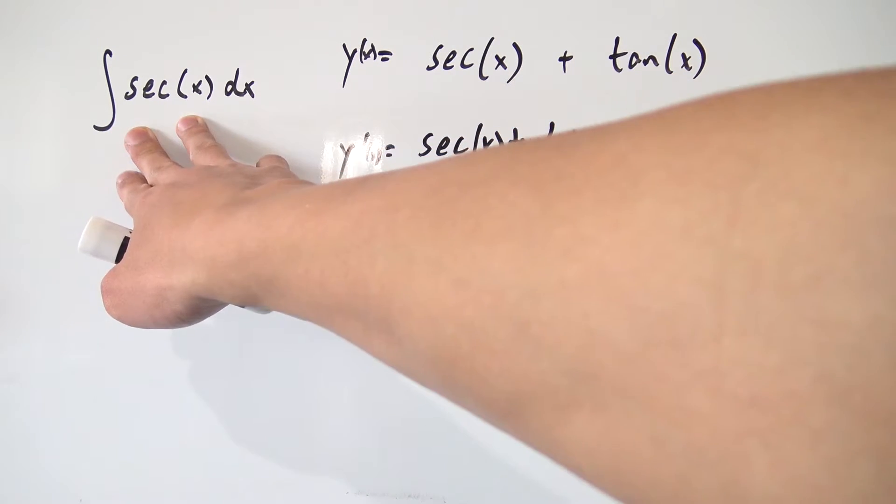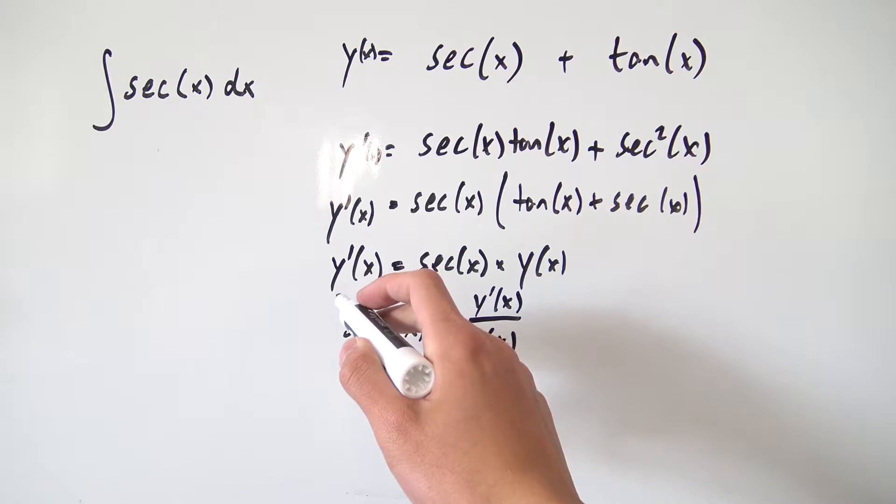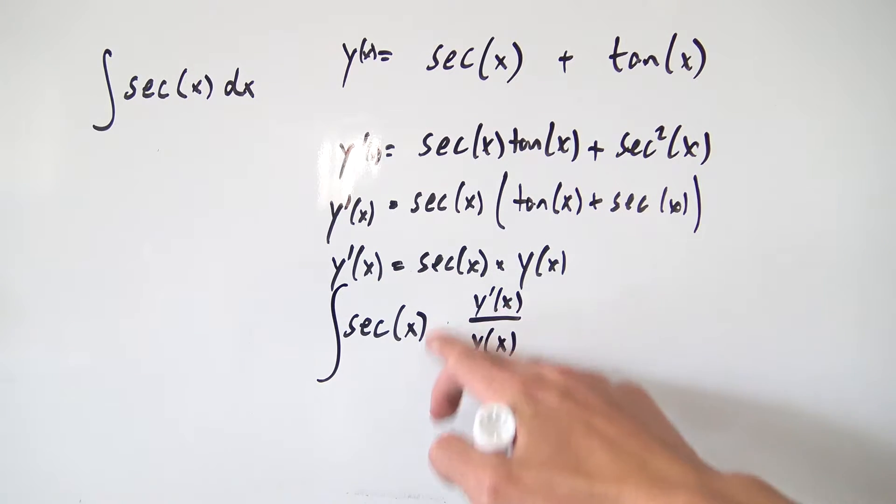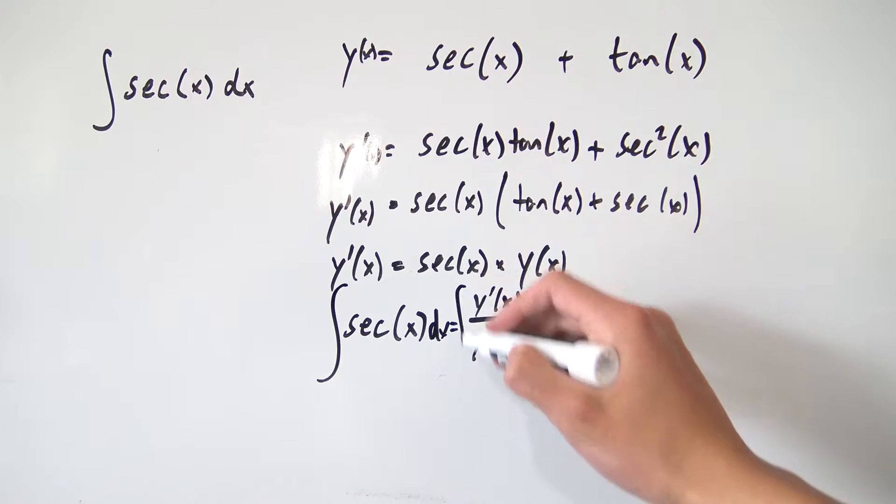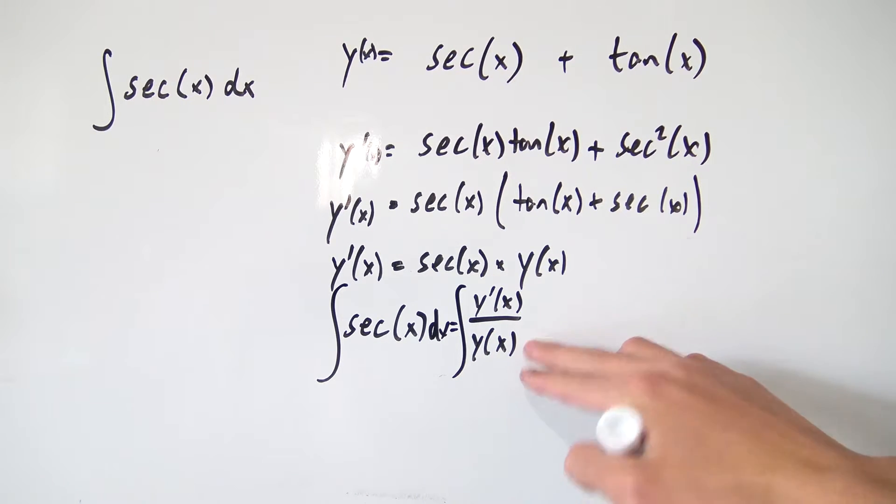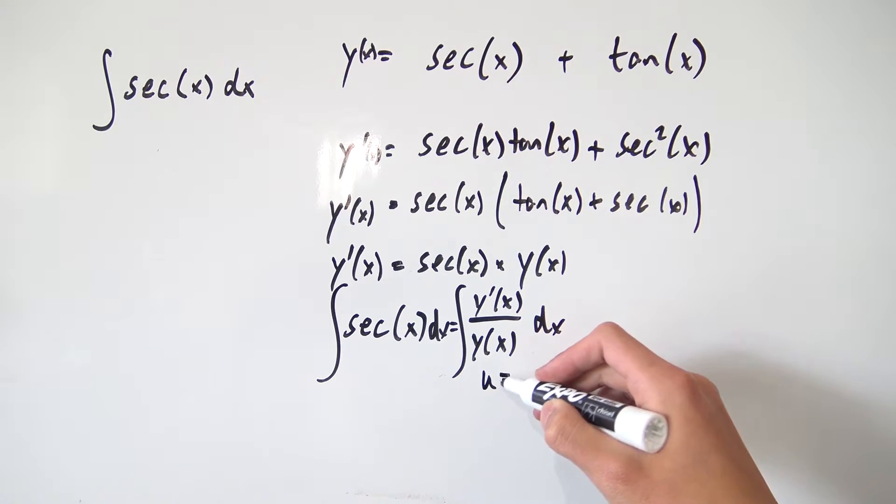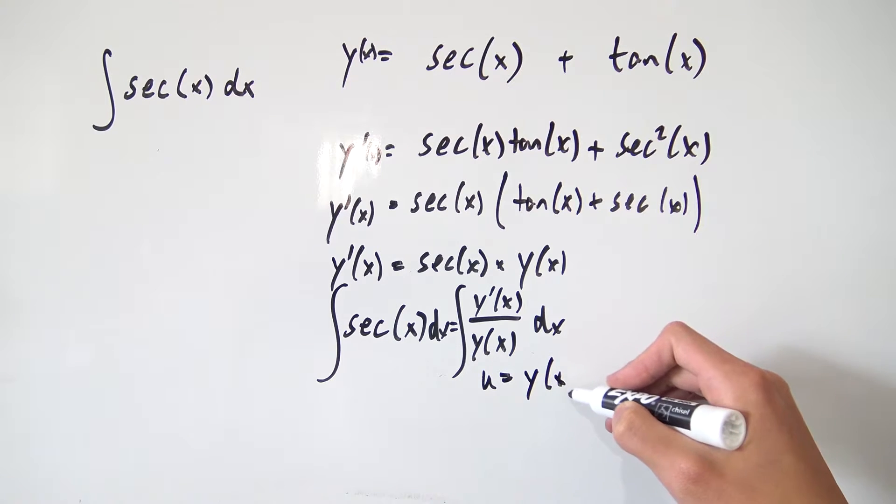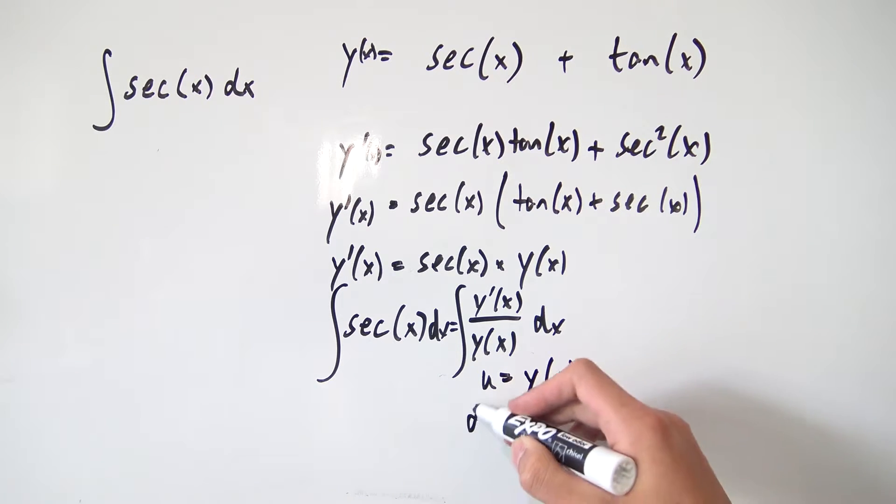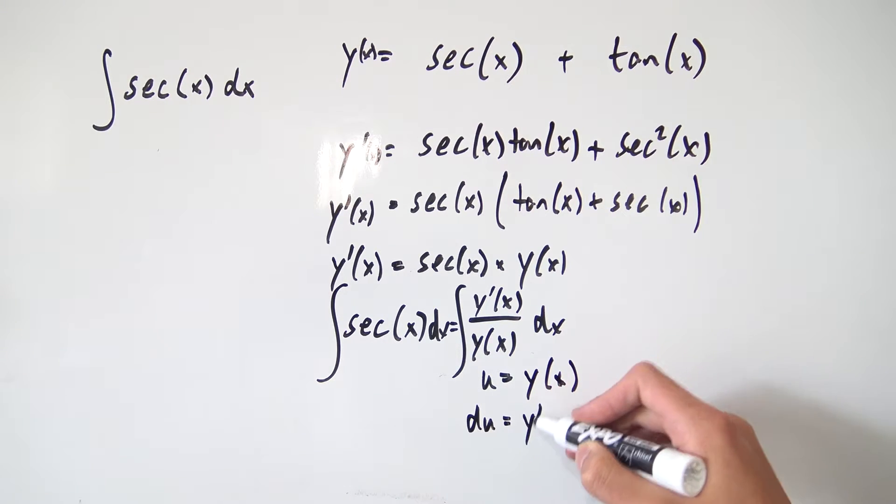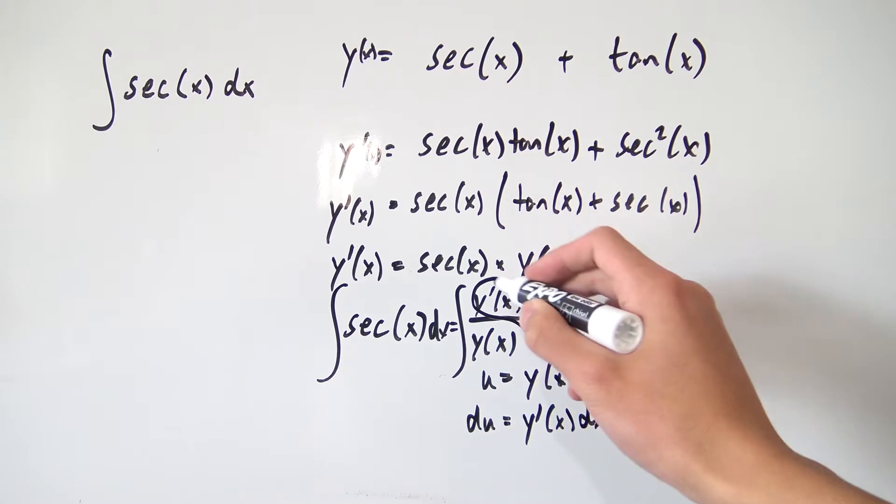And the nice thing is we wanted to integrate a secant at the very start. So integrating secant with respect to x is the same thing as integrating this y prime over y with respect to x. And what does this thing evaluate to exactly? It's actually going to evaluate to the natural log of y. And you can prove that quite easily if we just do a little u substitution to let u be equal to y of x. And that means du is the derivative of y. So y prime of x dx.